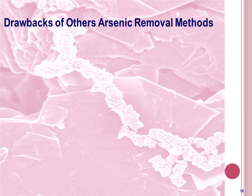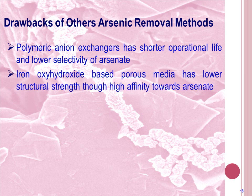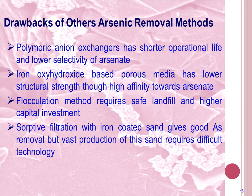After observing successful arsenic removal from water using INP, let's have a look at the drawbacks of other arsenic removal methods. The usual polymeric anion exchanger has a shorter operation life and lower selectivity for arsenic. Iron-oxy-hydroxide based porous media has lower structural strength despite having high affinity towards arsenate. Flocculation methods require safe landfill and high capital investment. Adsorptive filtration with iron-coated sand gives good arsenic removal, but large-scale production of this sand requires difficult technology.